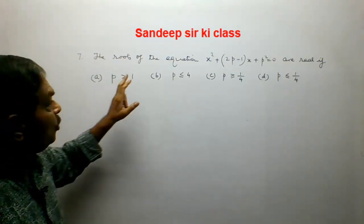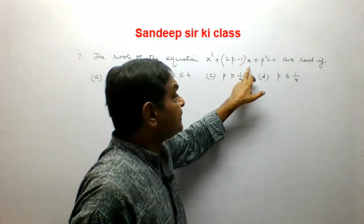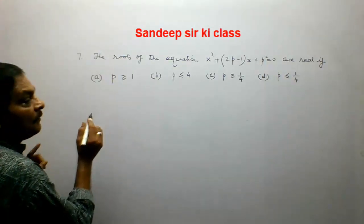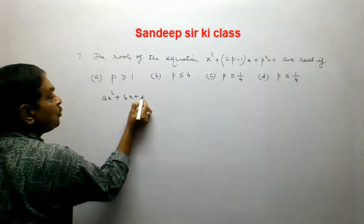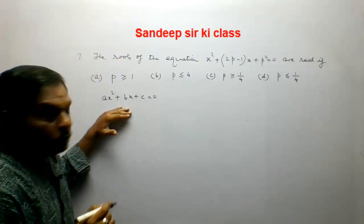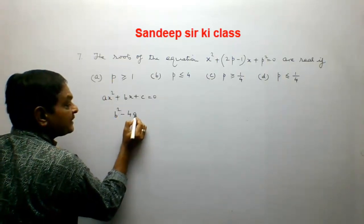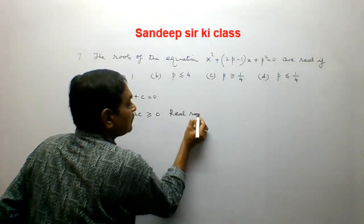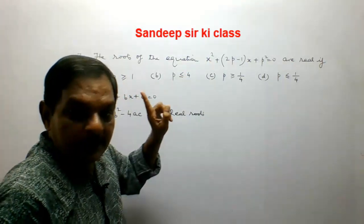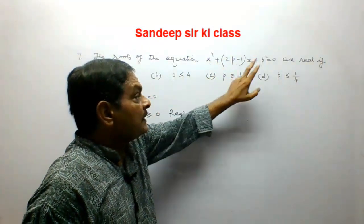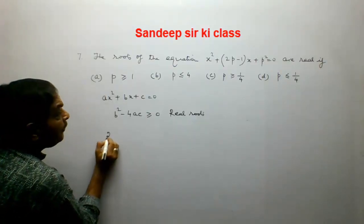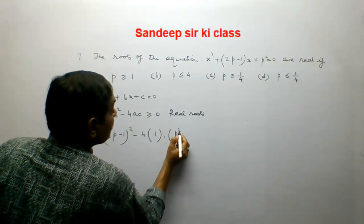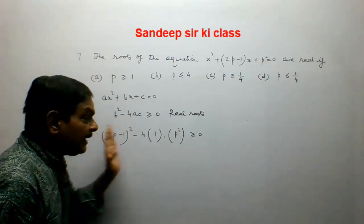Question number 7. The roots of the equation x² + (2p-1)x + p² = 0 are real if — four options are given. For roots to be real, the discriminant b² - 4ac must be greater than or equal to 0. Here a = 1, b = (2p-1), c = p². So (2p-1)² - 4(1)(p²) ≥ 0.